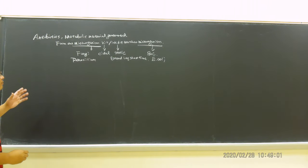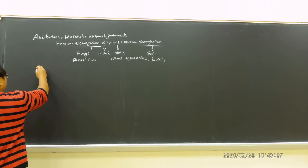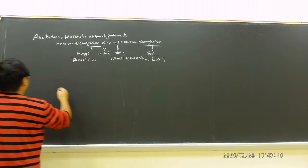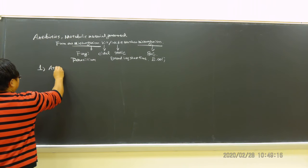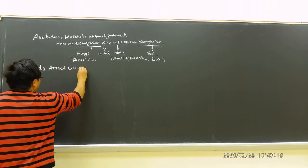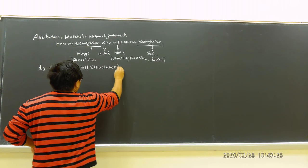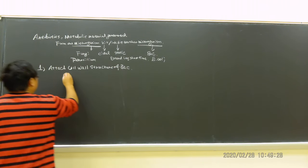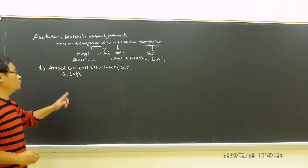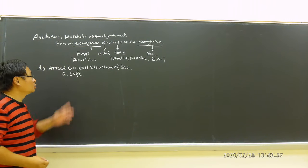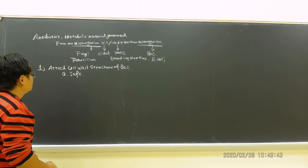Now I want to mention the mechanism behind that. There are several listed in the textbook. Number one is attacking cell wall structure of bacteria. This is the safest for human beings because animal cells do not have cell wall. Bacterial cells have the cell wall.